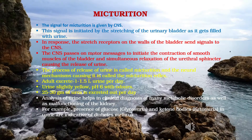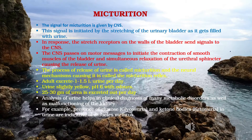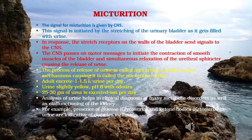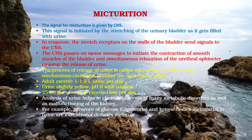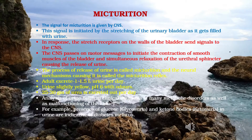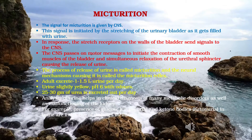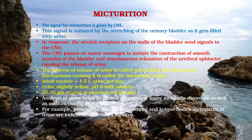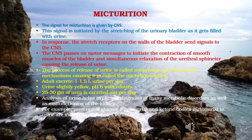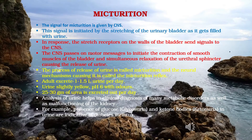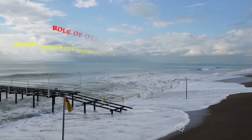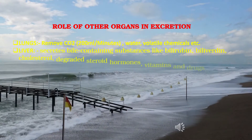Adults excrete 1 to 1.5 liters of urine per day. Urine is slightly yellow, with a pH of 6 and a characteristic odor. 25 to 30 grams of urea is excreted per day by the kidneys. Analysis of urine helps in clinical diagnosis of many metabolic disorders and kidney malfunctioning. For example, the presence of glucose (glycosuria) and ketone bodies (ketonuria) in urine are indicative of diabetes mellitus.